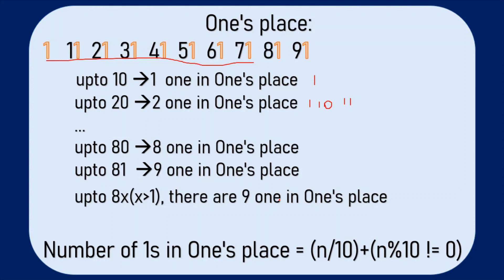The number of ones in the ones place can be derived as: n divided by 10 (as it is the unit place, naturally divided by 10), plus the logical result of (n modulus 10 not equal to 0), which is either 1 or 0. For example, consider the digit 80: 80 divided by 10 is 8, and 80 modulus 10 is 0, which equals 0, so the result is false. The number of ones in the ones place for 80 is only 8.